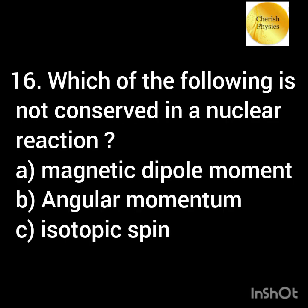Which of the following is not conserved in a nuclear reaction? Option A: magnetic dipole moment. Option B: angular momentum. Option C: isotopic spin.